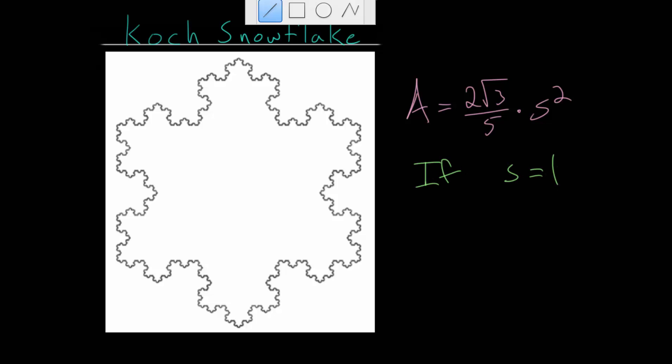s is equal to 1, which in this drawing would be this length here, or really any of these sides in the original equilateral triangle, this is s, and we're saying this is equal to 1, then the area of this entire figure would just be twice the square root of 3 over 5.